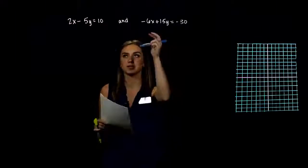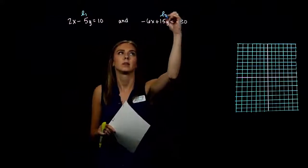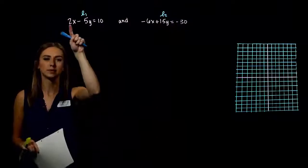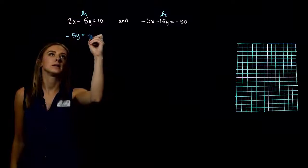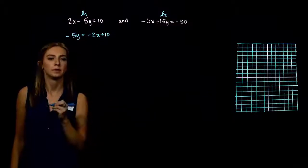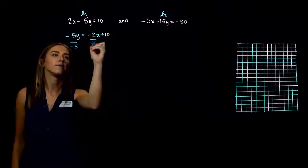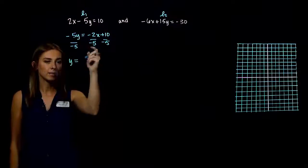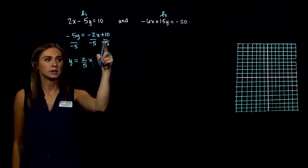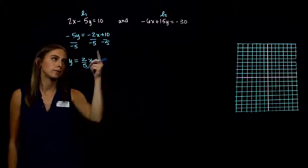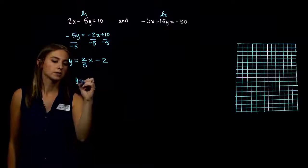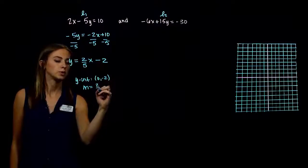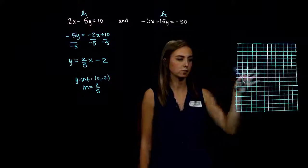Practice problem 1: label line 1 and line 2. For line 1, move 2x to the other side to get negative 5y equals negative 2x plus 10, then divide by negative 5. The result: y equals two-fifths x minus 2. Y-intercept at (0, negative 2), slope 2 over 5.